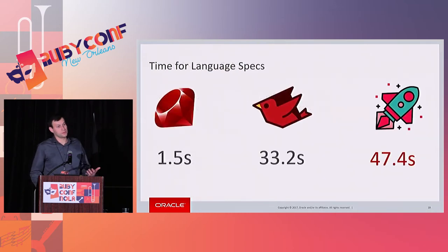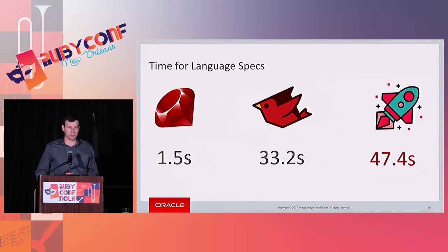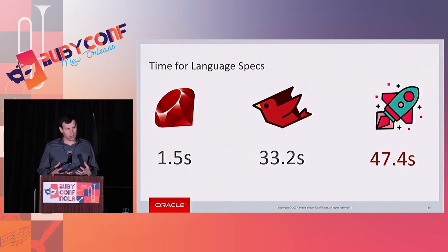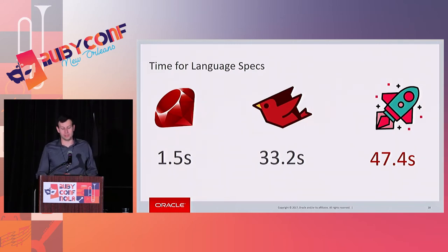When we run these on the various Ruby implementations, MRI is again hands-down the fastest, completing all specs in about a second and a half. JRuby comes in at 33 seconds. TruffleRuby is at the end at 47 and a half seconds. This is really our problem — we're making great strides in improving compatibility, but many people running test suites discount us because this part is too slow.